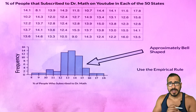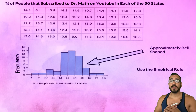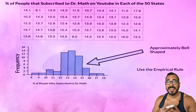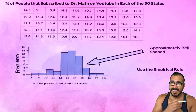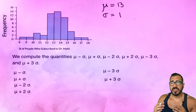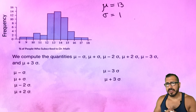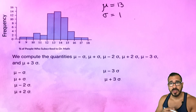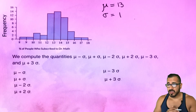We made a histogram and noticed it's approximately bell-shaped — it doesn't have to be exactly bell-shaped, but more or less we have a bell-shaped curve — so we can use the empirical rule. We'll plug those numbers into a calculator. In future videos I'll walk you through how to do this on the TI-84 calculator.